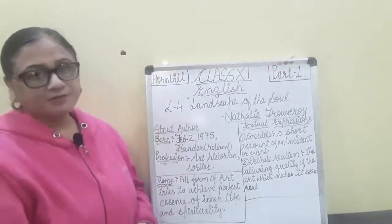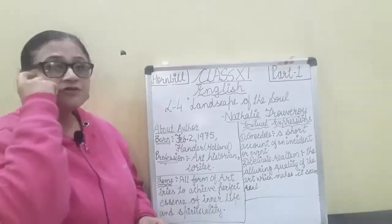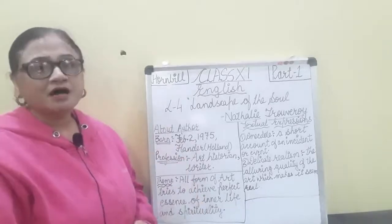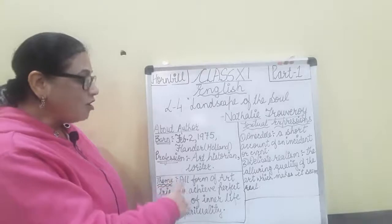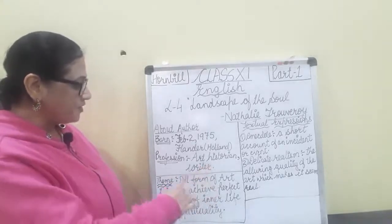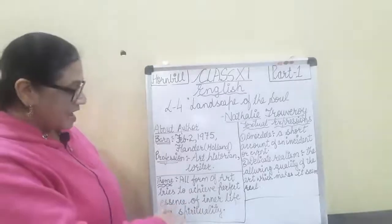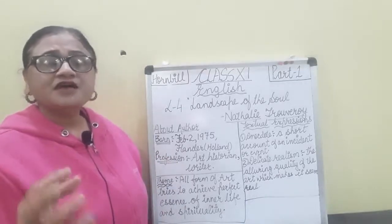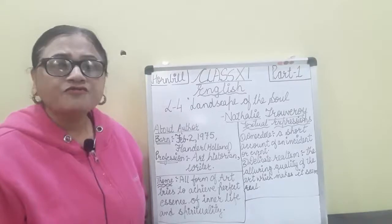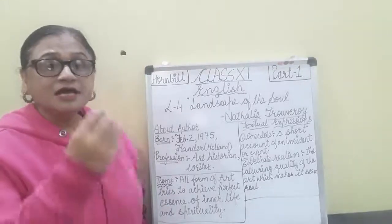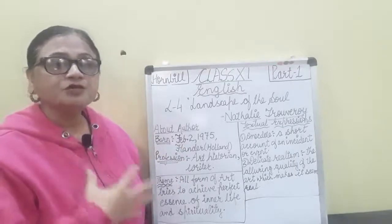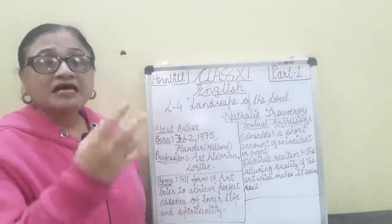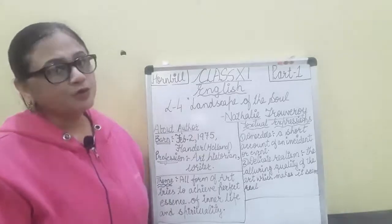What is the theme of this chapter? As the chapter is based on reality, the theme is also real. Since the chapter is about art, the theme is on art. The theme is: all forms of art try to achieve the perfect essence of inner life and spirituality. Every art form — whether dance, music, or anything else — if we learn it through our inner soul or inner heart, only then are we able to spread it properly in the world. Otherwise, the connectivity with the audience would not be there.